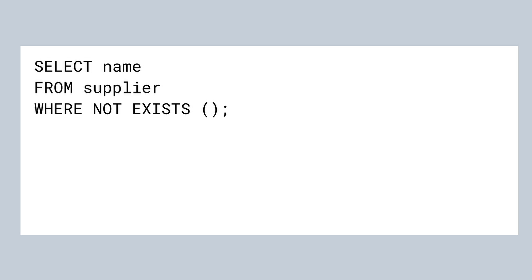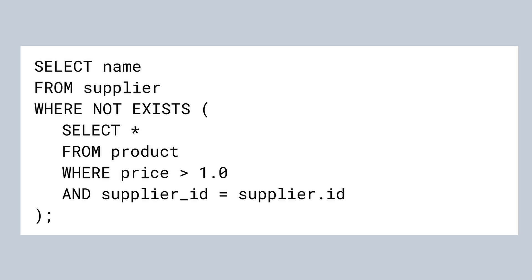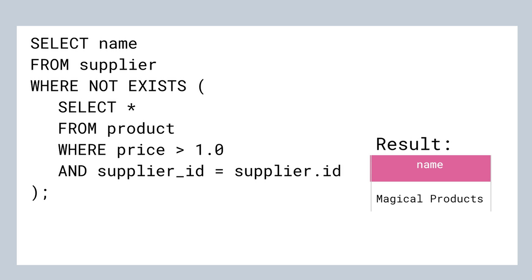We start with a very similar template: SELECT name FROM supplier WHERE NOT EXISTS followed by a pair of parentheses. Inside the parentheses we want to find all products for a given supplier that cost more than $1. So the WHERE clause in the subquery reads as follows: price is greater than 1 and the supplier ID matches the ID from the outer query. Again, this is a correlated subquery because the second condition refers to the main query. If we now run the instruction, we can see that there is only one supplier with no product above $1.